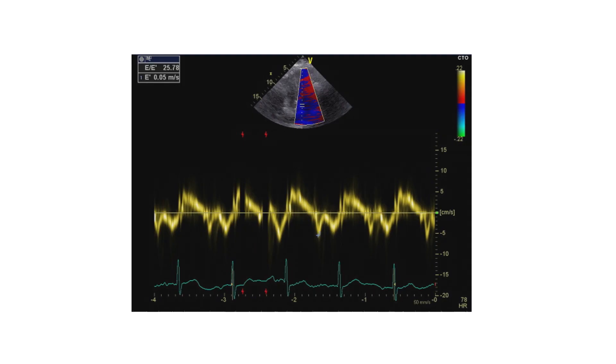If we look at E to E prime, what did we get? An E to E prime of 25, which is rather high. So the diagnosis would be clear, right? She has diastolic dysfunction, which would explain her dyspnea.